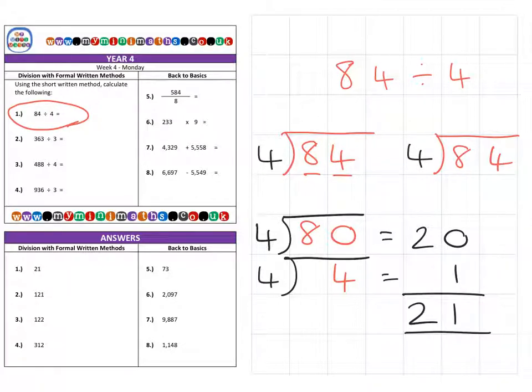But we can do a shorter version that's doing exactly the same thing, just not breaking down the numbers into their place value. How many fours fit into 8? That's 2. How many fours fit into 4? That's 1. So we finish up with an answer of 21.